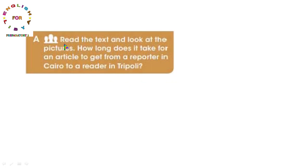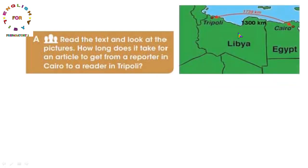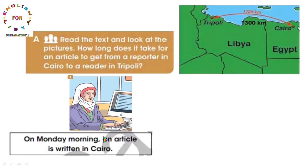نرجع للتمرين exercise A. Read the text and look at the pictures. السؤال: how long does it take for an article to get from a reporter in Cairo to a reader in Tripoli? عندنا خريطة ليبيا ومصر والمسافة بين طرابلس والقاهرة هي 1739 كيلومتر. أول صورة: on Monday morning an article is written in Cairo - مقال يكتب في القاهرة، وهذه جملة مبنية للمجهول.